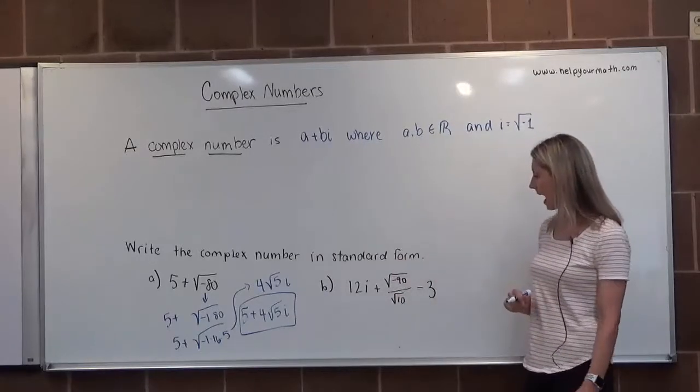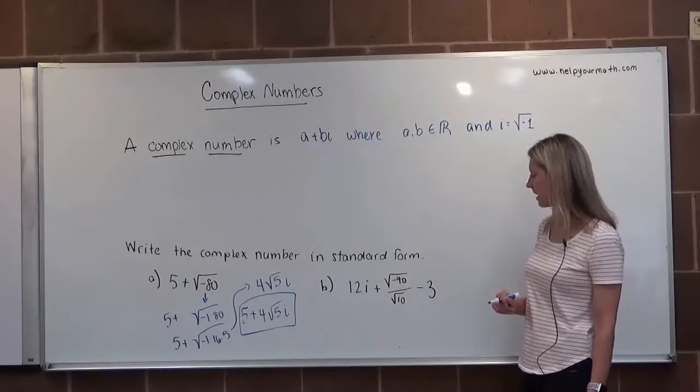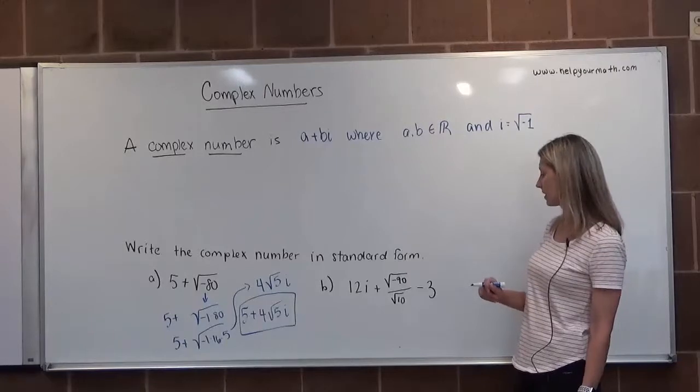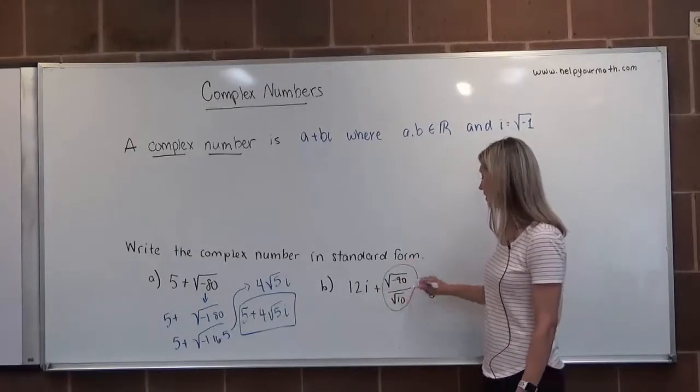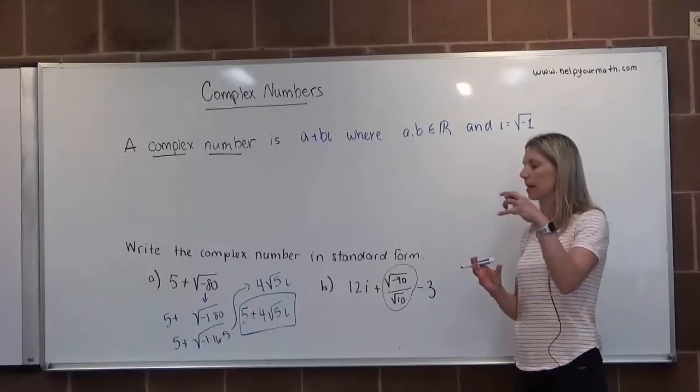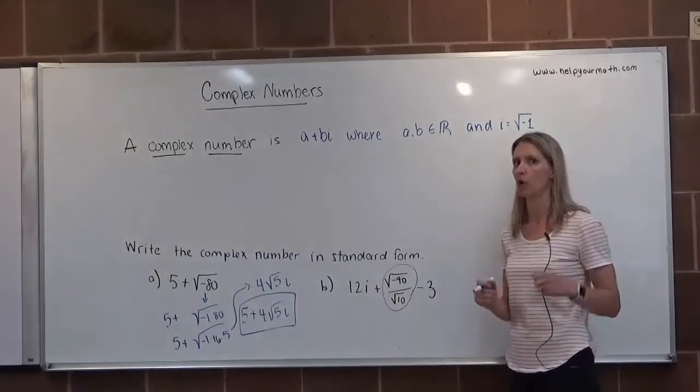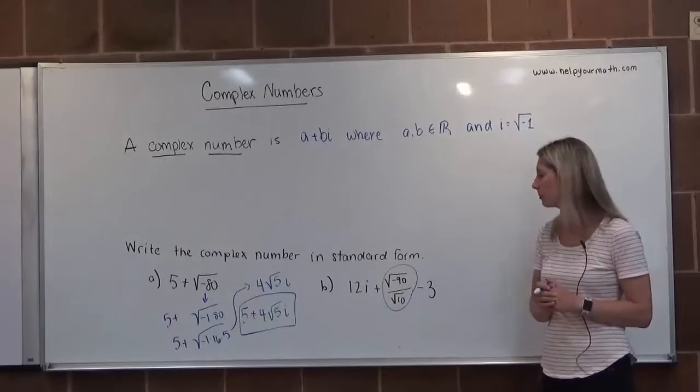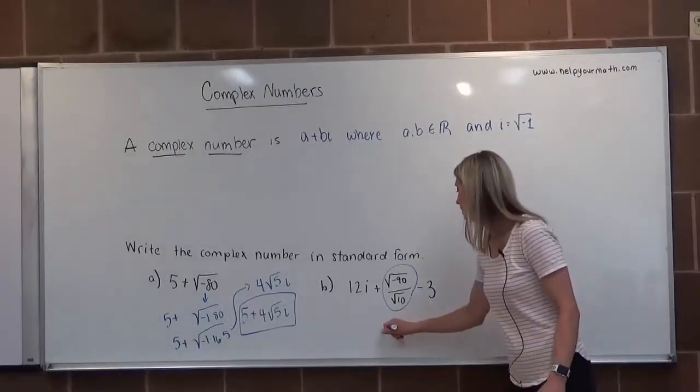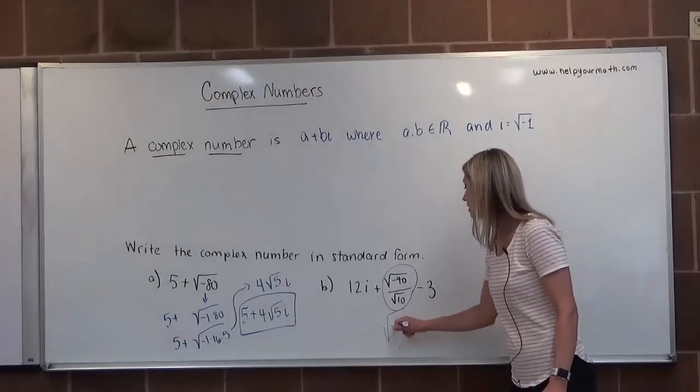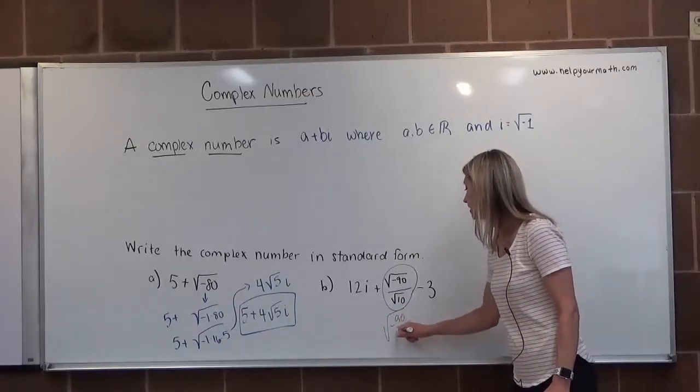Letter b, we have 12i plus the square root of negative 90 divided by the square root of 10 minus three. So the first thing I'm going to take care of is this. Just like you can disassemble and reassemble radicals where the factors are being multiplied, you can do the same thing when they're being divided.